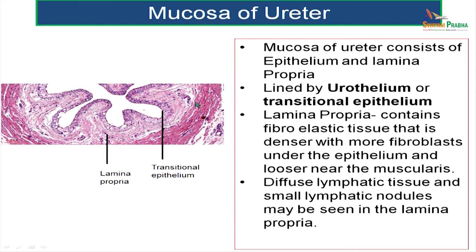But near the muscularis, the loose areolar tissue is not dense. Sometimes you might occasionally observe diffuse lymphatic tissue and small lymphatic nodules in the lamina propria.